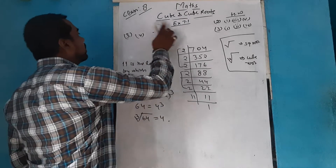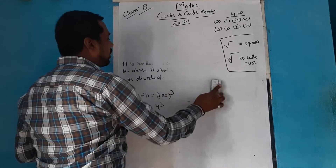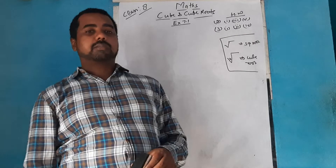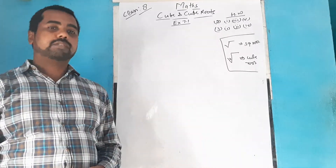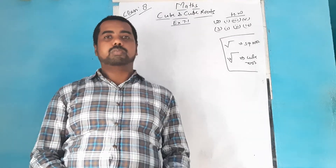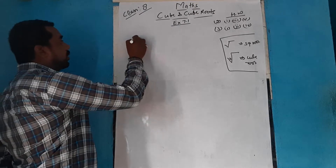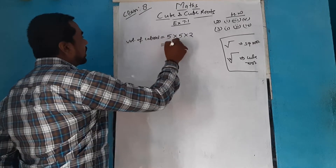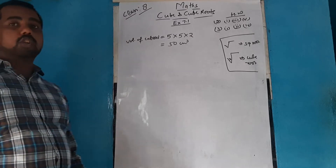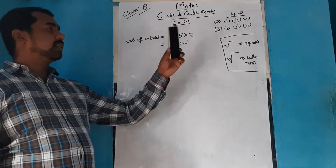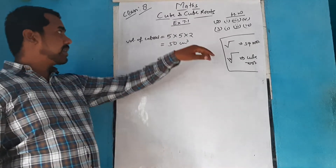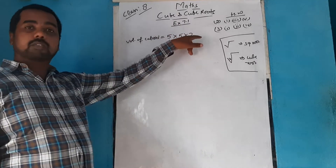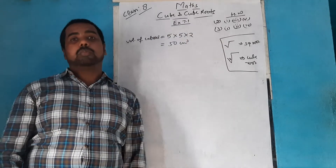Now coming to question 4: a cuboid of plasticine has dimensions 5 cm × 2 cm × 5 cm. How many such cuboids will be needed to form a cube? First, find the volume of the cuboid: 5 × 5 × 2 = 50 cm³. In a cube all sides must be equal. Here we have two values of 5 and one value of 2, so to make a perfect cube we require one more value of 5 and two more values of 2.